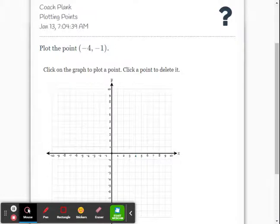If it's a positive number, you go right. If it's a negative number, you go left from the origin. So we're going to go left four units, but that's not our point. We need the negative one now. That's the y-coordinate.